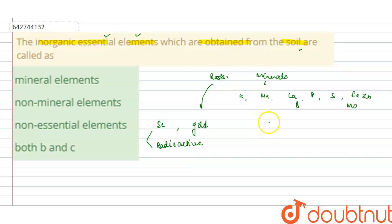But they may not be necessary for their growth. So what do you mean by the essential element? Essential elements are the elements that are directly involved in the growth of the plant. They are absolutely necessary for their growth.